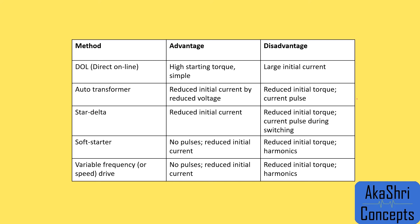The fourth type is the Soft Starter. As the name suggests, there will be a gradual increase in voltage, so no pulsation will occur and there will be a reduced initial current. The disadvantage is that because of this reduced initial current, reduced initial torque will also result, and harmonics are generated.